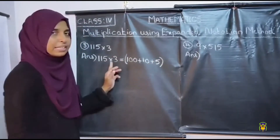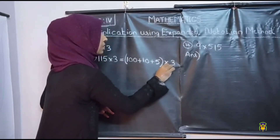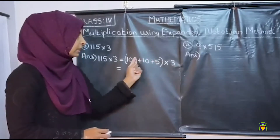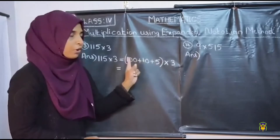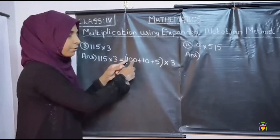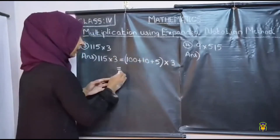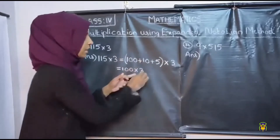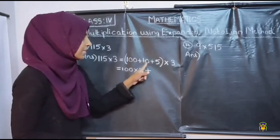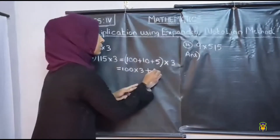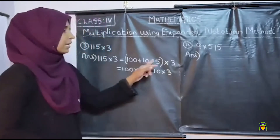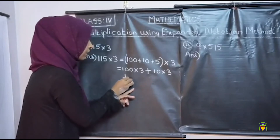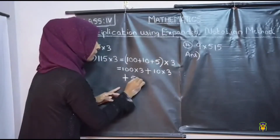So its expanded notation is 100 plus 10 plus 5, into 3. What is the next step? We want to multiply each term by 3. Here there are 3 terms: 100, 10, and 5. So first, 100 into 3, then plus 10 into 3, then plus 5 into 3.